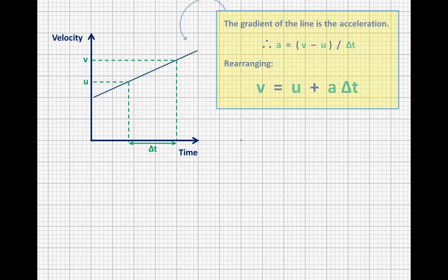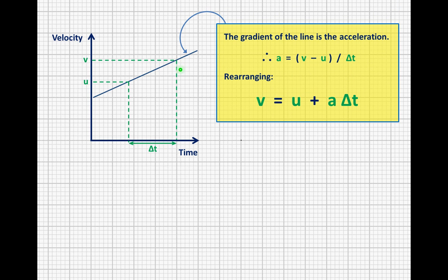So the vertical distance is going to be v minus u. And we're going to divide that by the horizontal distance, which is delta t. So we get this equation over here. And if we just rearrange that by multiplying through by delta t and moving the u to the other side, we end up with v equals u plus at, which is our first equation of motion.